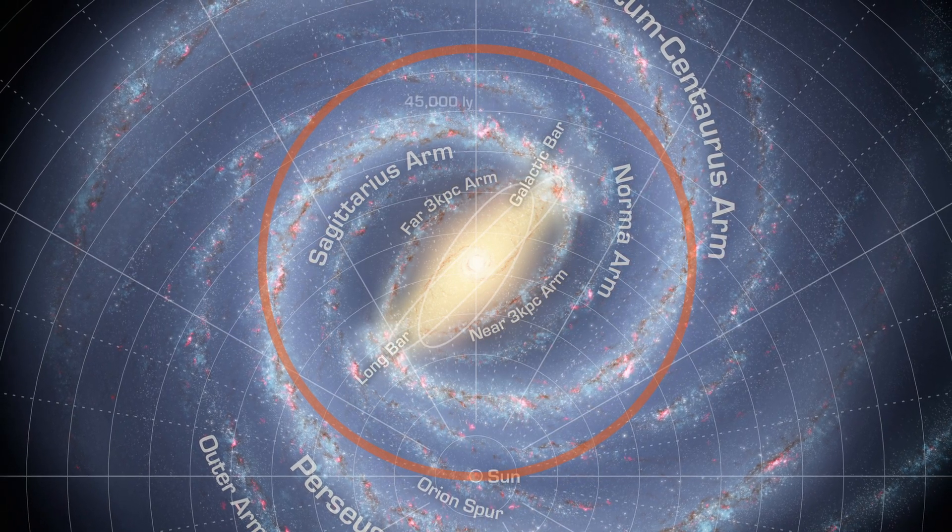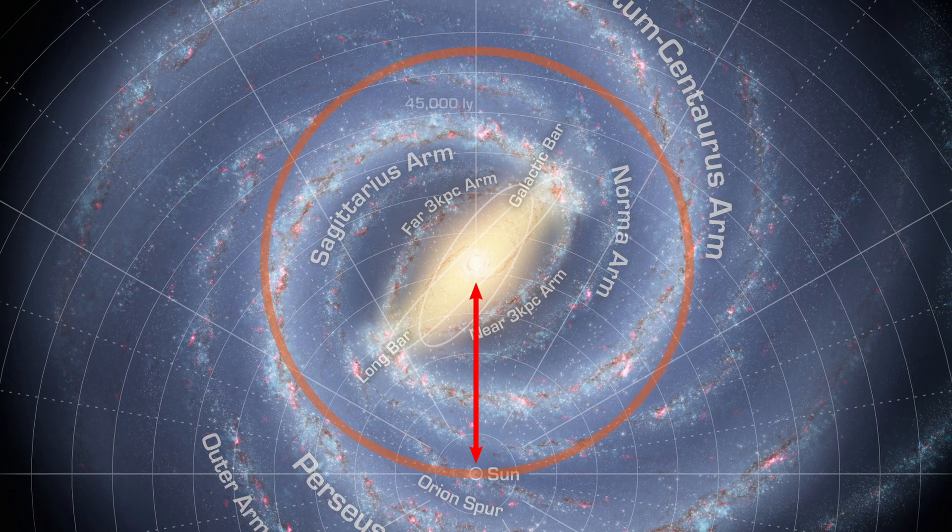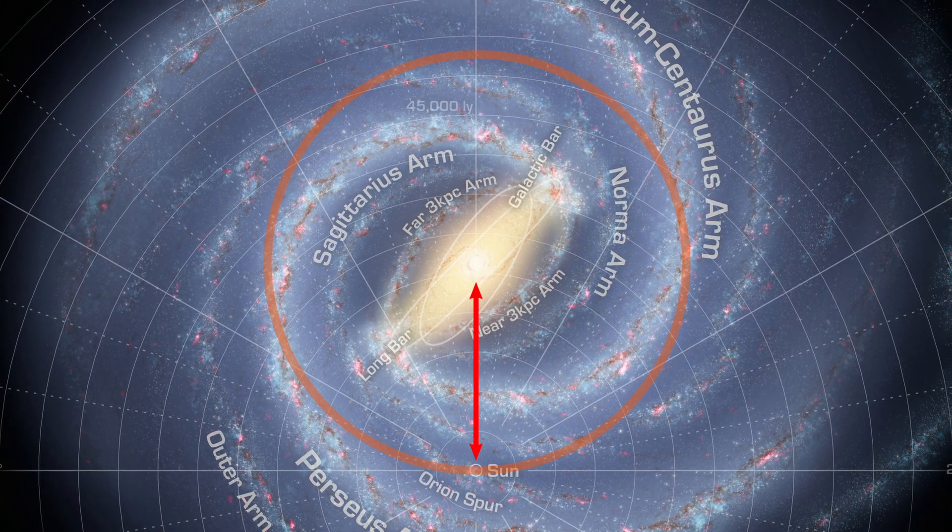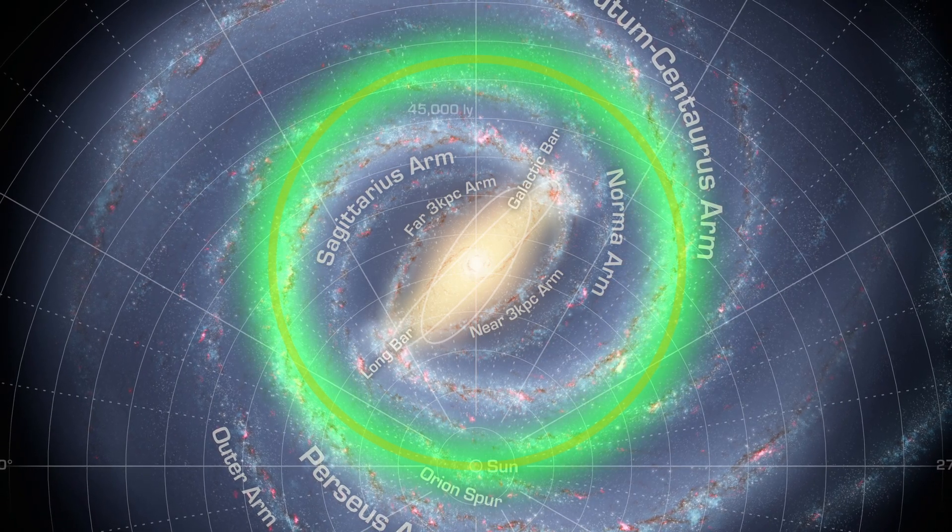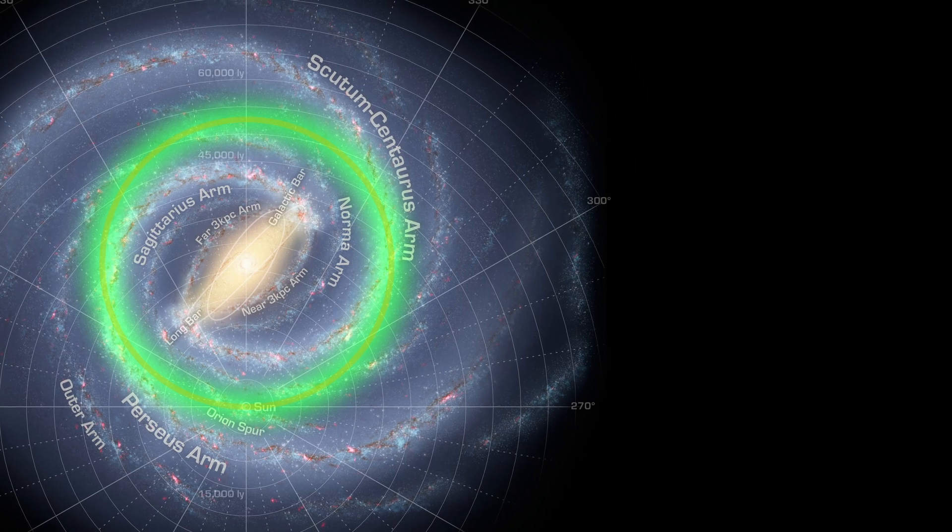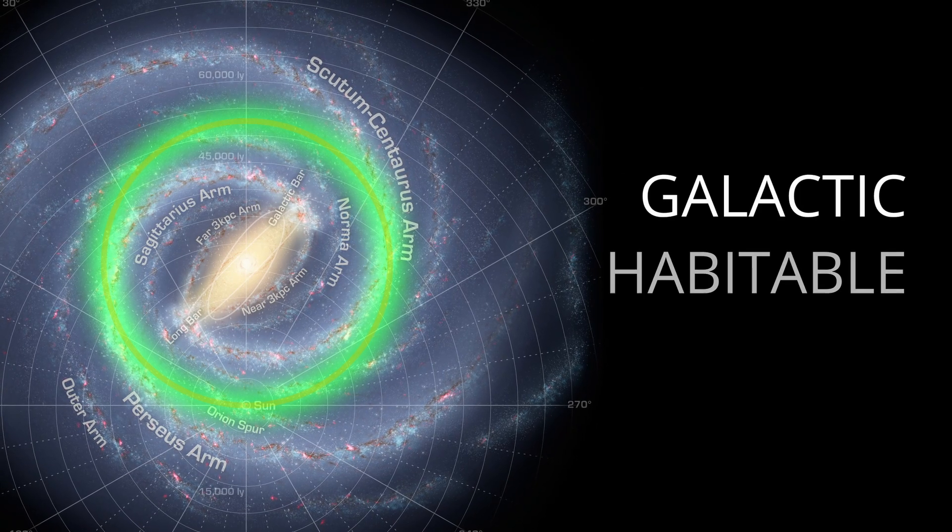We also happen to be far enough from the galactic core that we're never exposed to the intense radiation there. It's as if the sun is orbiting the galaxy in its very own Goldilocks zone, a term that has been coined the galactic habitable zone.